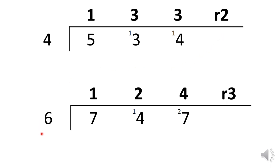Moving down to this one. How many groups of six can I make out of 700? I can make one complete group and have 100 left over, and this moves across to the tens column, leaving me with 14 tens. How many groups of six can I make out of 14 tens? I can make two complete groups and I have two tens left over, and this moves across to the ones column, leaving me now with 27.